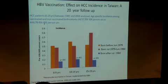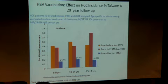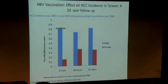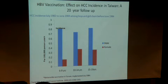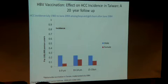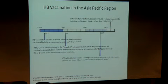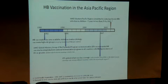Looking at the red and orange bars — those are patients in different age groups born before 1984, showing the incidence of liver cancer. The blue bars represent those born after July 1984, when Taiwan started universal vaccination. The same cohort, males and females, born before June 1984 had higher rates. WHO has plans to make Hepatitis B prevalence less than 2% worldwide, especially in Asia Pacific, by 2012 — though that goal may not be realized.